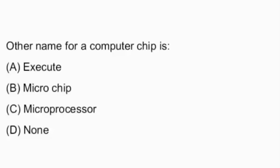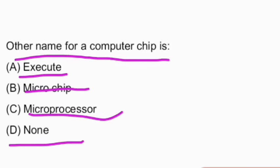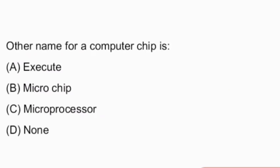Hello everyone, welcome back to Vidya TV. In this video, I cover junior assistant model questions — computer basics MCQ for students. First question: the other name for a computer chip. The options are execute, microchip, microprocessor, or none of the above. The answer is option B, microchip.